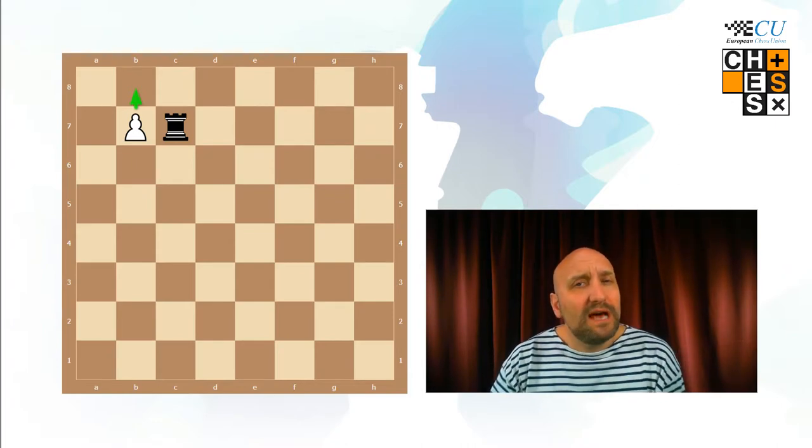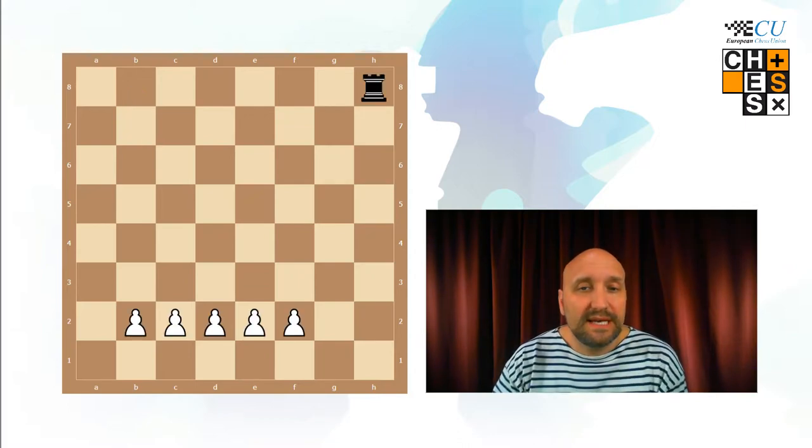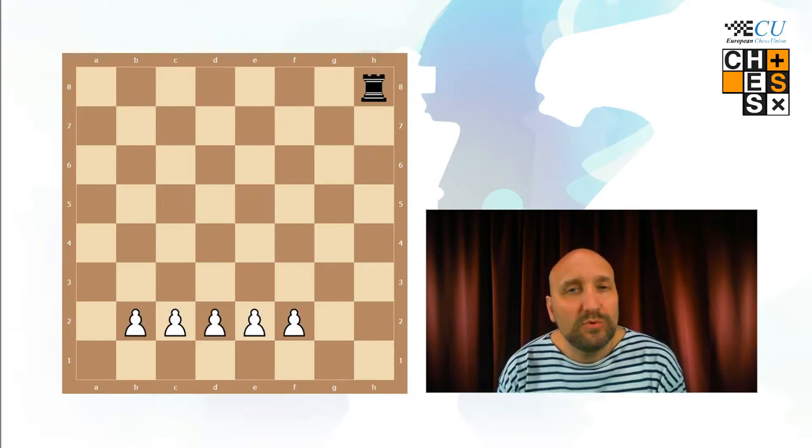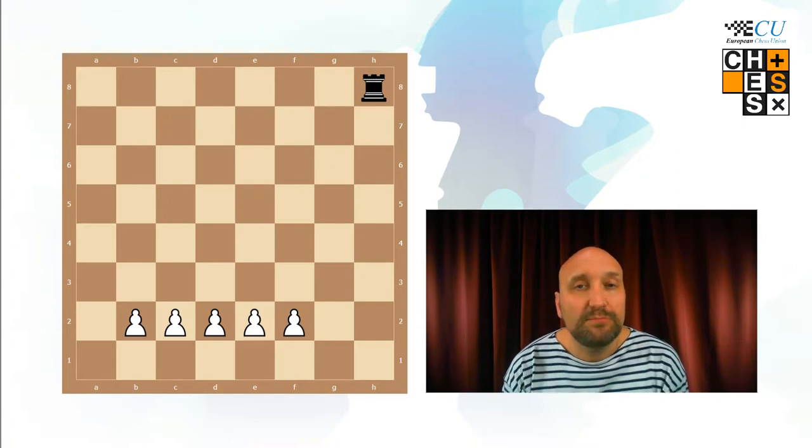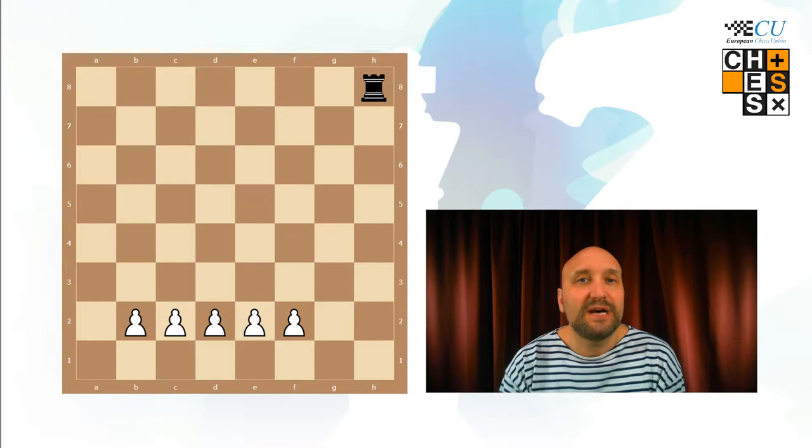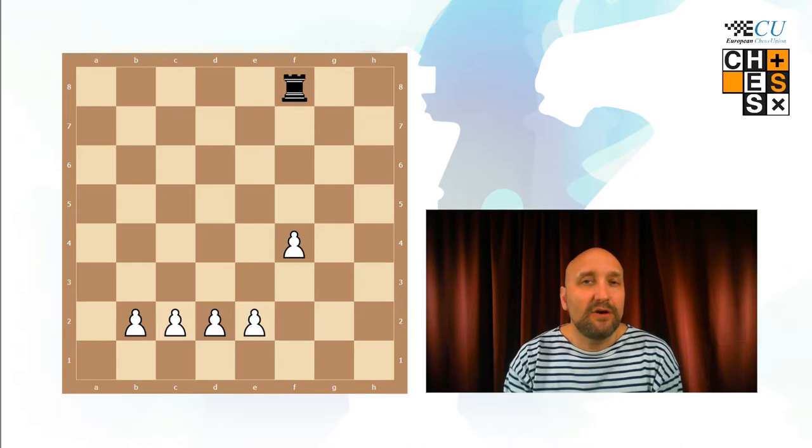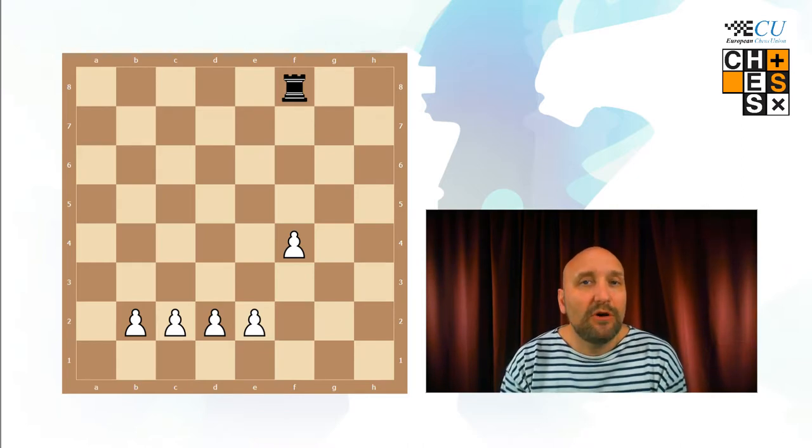There is one other guideline I want to give you before you start playing the game, and it is that it is important for the rook to attack the pawns from the side or from the back. Because if you try to attack the pawns from the front, then white can make use of the idea of building a chain of the pawns.